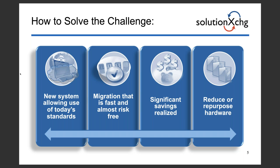When you select such a system, you need to make sure the new system follows all of today's standards. You have to look at migration — it has to be fast and risk-free. You want to realize significant savings, so pick a system that is architecturally much simpler than what you have today. You also want to reduce or repurpose existing hardware. If you have multiple VM servers or systems, you can reduce the load on your VM farm and with that reduce your hardware requirements.